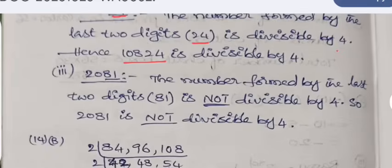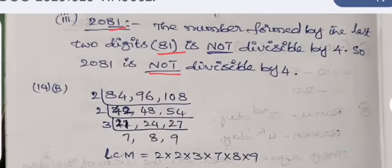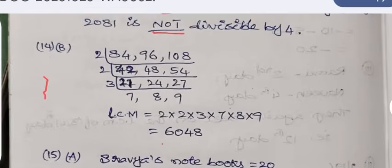Next, in the third number, the number formed by the last two digits in the same order is 81. 81 is not divisible by 4, so the complete number 2081 is not divisible by 4. We are required to find the LCM of these numbers, and the LCM is calculated by division method. The answer comes out to be 6048.